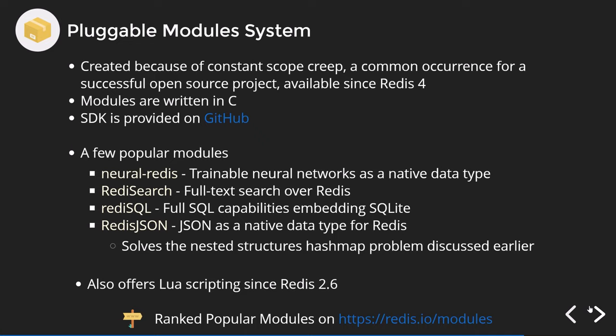The pluggable module system was created because of constant scope creep. Originally Redis was extensible via Lua scripting since version 2.6, but since it's written in C, an SDK is now provided for people to write their own plugins. Popular modules include: Neural Redis (trainable neural networks as a native data type), Redis Search (full-text search over Redis), Redis SQL (full SQL capabilities embedding SQLite), and Redis JSON (JSON as a native data type — which is the solution to the nested structures problem mentioned earlier). I've used Redis JSON myself and I can recommend it.